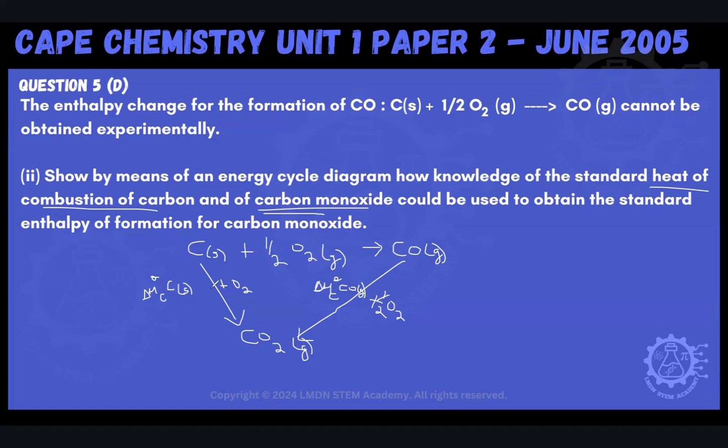So that's what they want us to do. How am I going to use knowledge of this number and how am I going to use knowledge of this number to find out the delta Hf, the formation of carbon monoxide? Because I can't find it experimentally. So how can I use these values, provided that I know them, to find it?